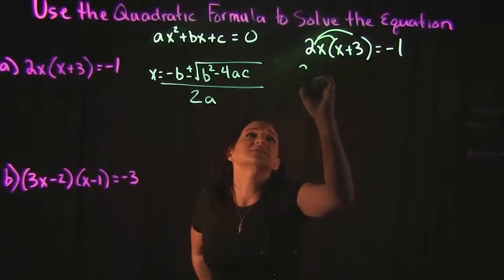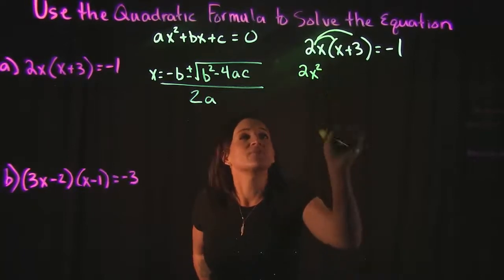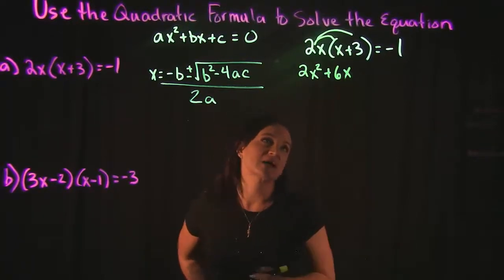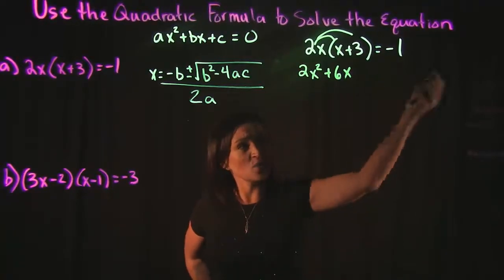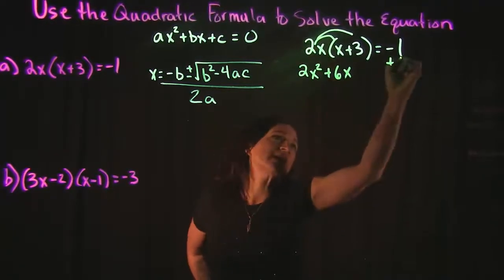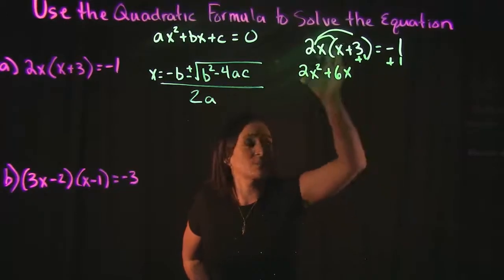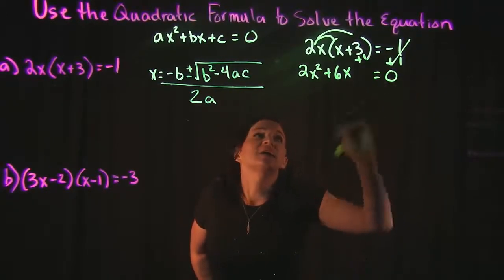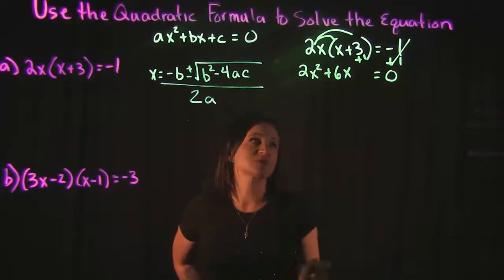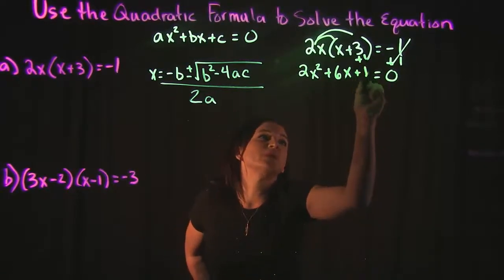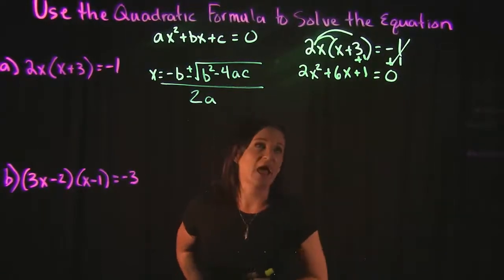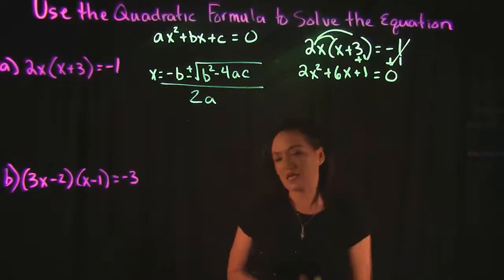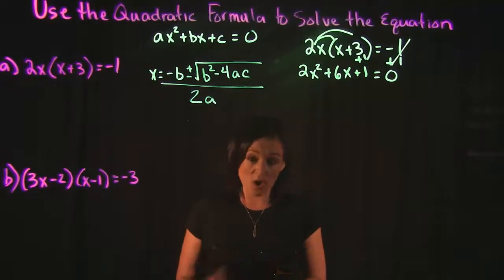2x times x gives us 2x squared, and 2x times 3 gives us 6x. Also, the negative 1 on the right side — we add 1 to both sides, so it cancels on the right-hand side, which is now set equal to 0, and we move the plus 1 to the left. Everything is now on one side of the equation set equal to 0.